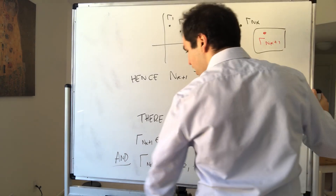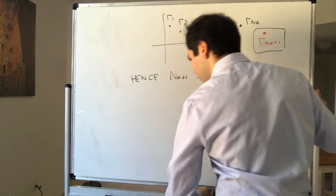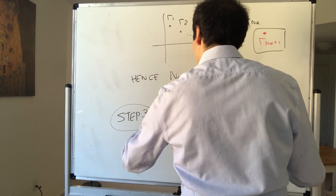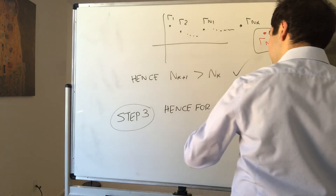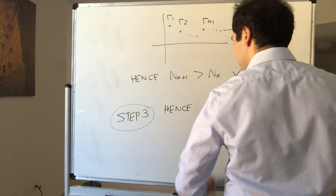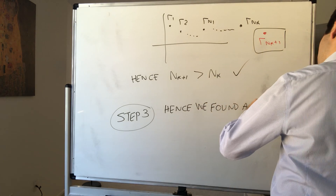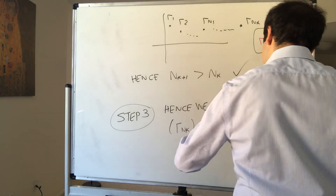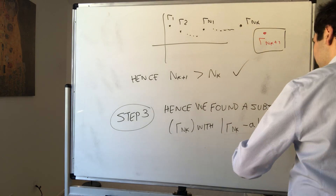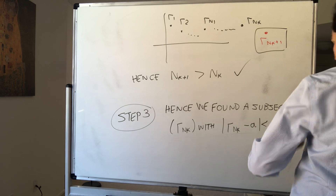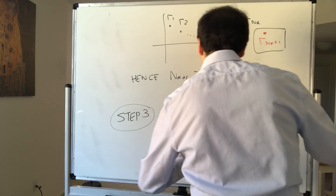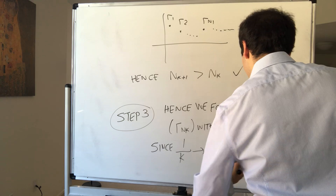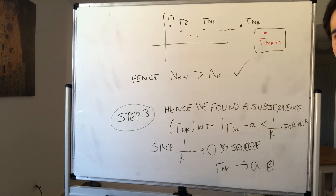Hence, given r_{n_k} we've defined the next term. By induction we've found a subsequence r_{n_k} with |r_{n_k} − a| < 1/k for all k. Since 1/k → 0, by the squeeze theorem r_{n_k} → a as k → ∞. Therefore, we are done.